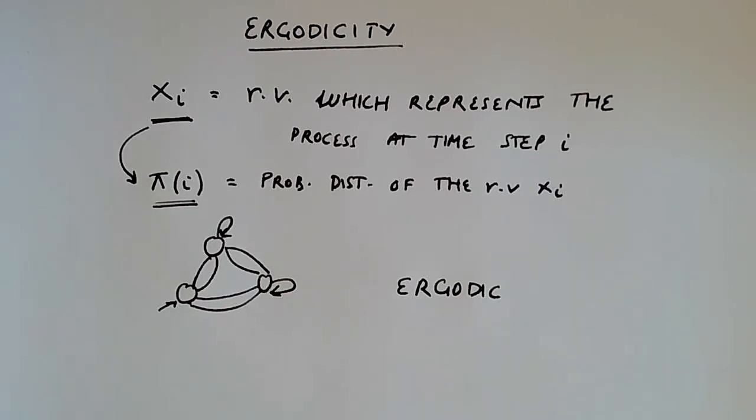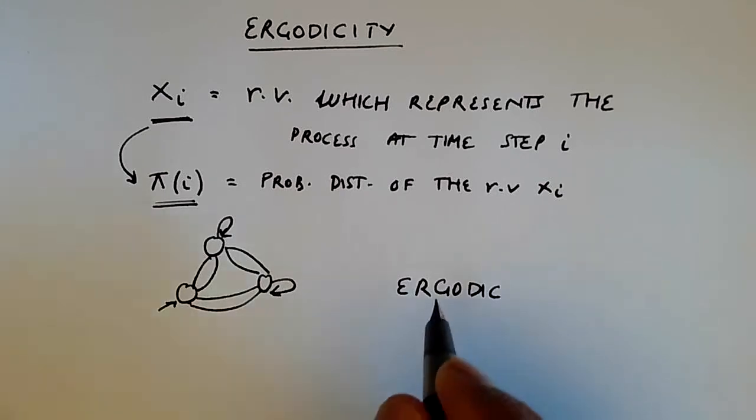So no matter which initial state was the first state in the trajectory, over time that memory is lost and the stochastic process becomes somehow converged into some distribution.